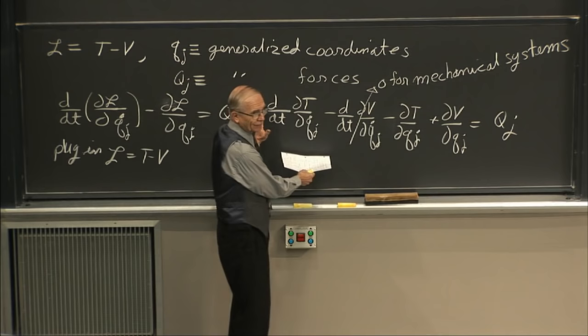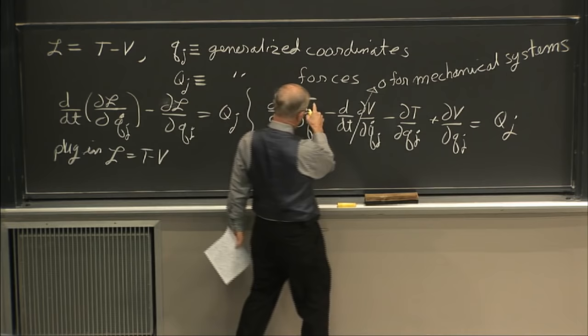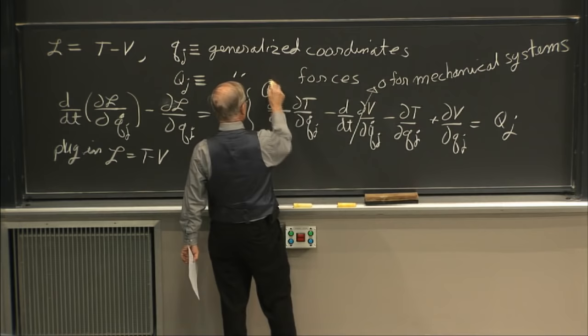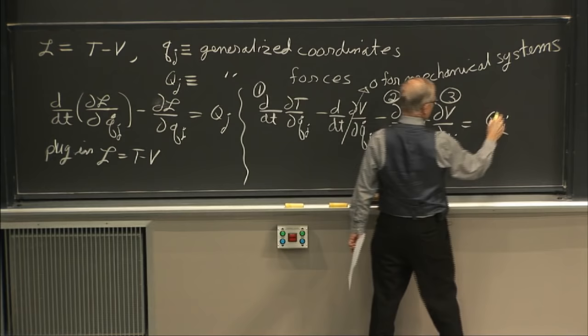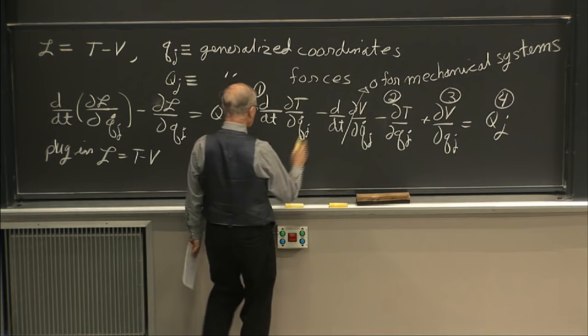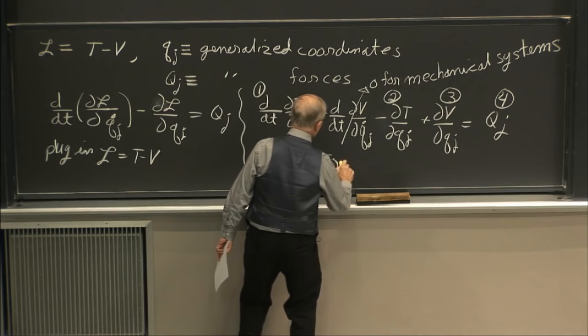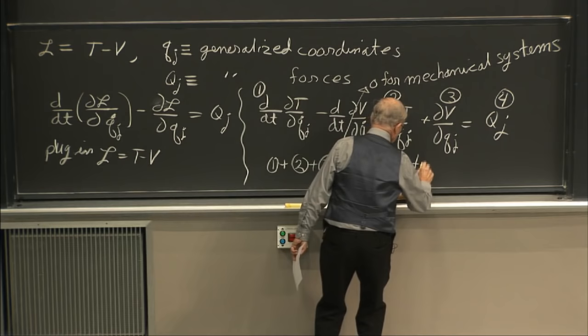So you just use what you need: kinetic energy here, kinetic energy there, potential energy there. I number these — there's a lot of bookkeeping in Lagrange — so I call them term one, term two, term three, and term four. You take the results of one plus two plus three equals four, and you do that j times to get the equations you're after.